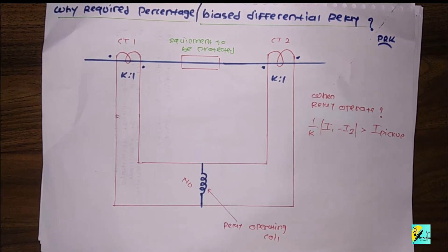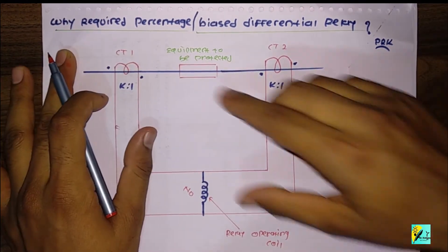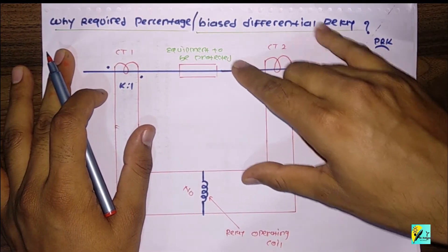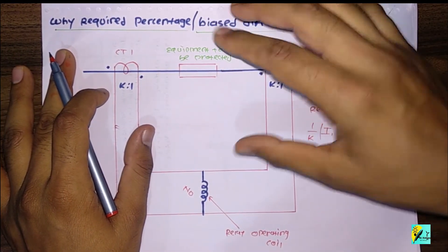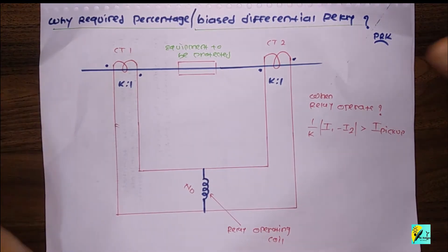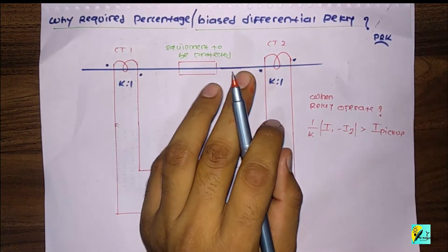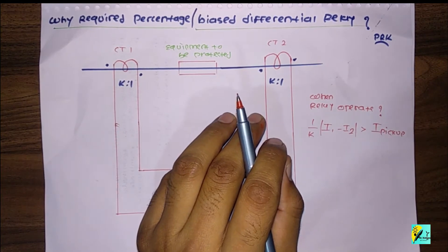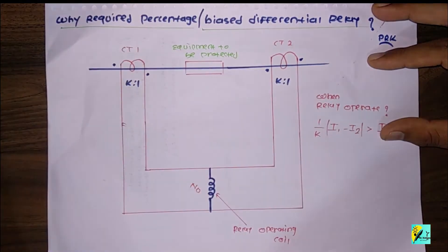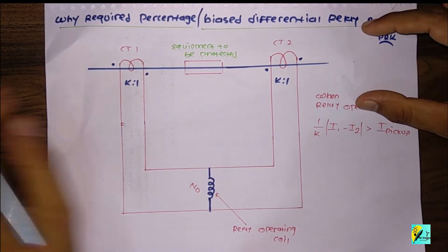Hello and welcome friends, this is Pangach Kapadia again. In this particular video we are going to see why we require a percentage or bias differential relay over only a simple differential relay, because a simple differential relay's operation depends on the phase difference of two or more electrical quantities. This same principle applies to the percentage or bias differential relay, but there is one key difference that I will show you in this lecture.